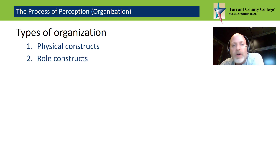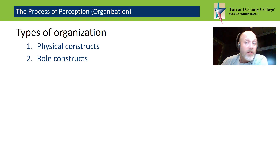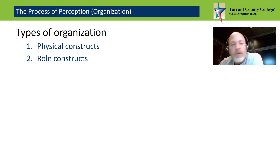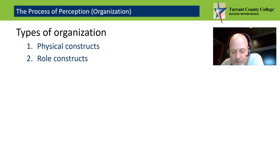Role characteristics emphasize a person's social or professional position. So we notice that a person is an adjunct instructor, is a teacher, maybe they're an accountant, a doctor, a cop, a father, a community leader, and so on.